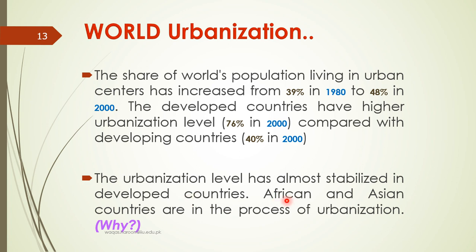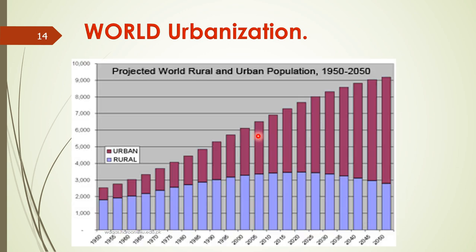In developed countries, the process of urbanization is now stagnant — around 70 to 80 percent. If you look at the graph showing time passing in years, the process of urbanization is growing, but the rural curve line decreases. This means that over time, the rural population moves to urban cities.